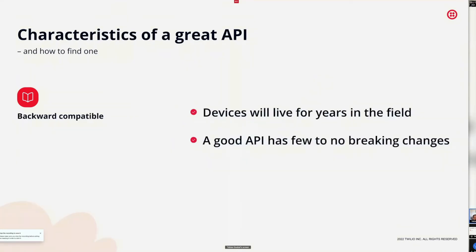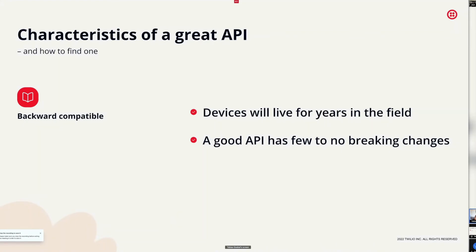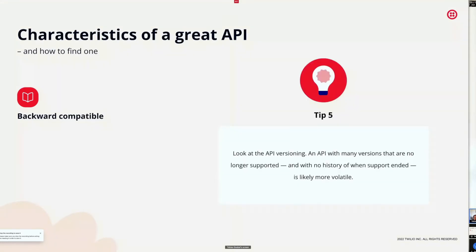APIs also need to be backward compatible. Your devices will live for years in the field — some deployments plan for a 10-year lifespan, and devices can run on a single battery charge for years. A good API has few to no breaking changes. Look at the API versioning history; many unsupported versions suggest volatility. Search for blog posts or news items about breaking changes for the API you're evaluating.